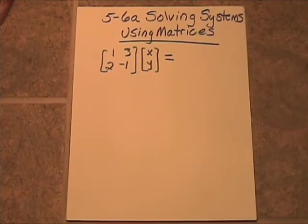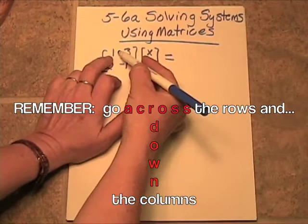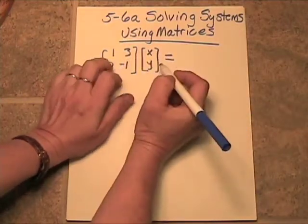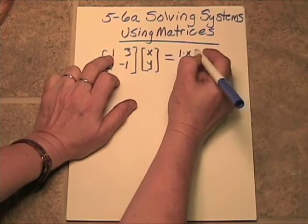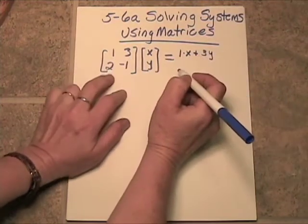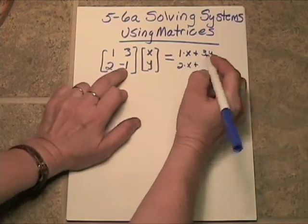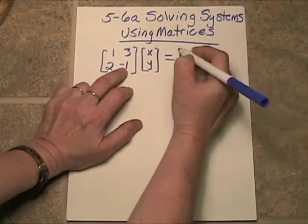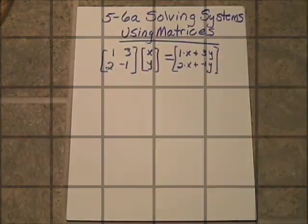Let's just do a real quick review of matrix multiplication here. Remember, you go across the rows and down the columns. So if we were to multiply this 2 by 2, we would have 1 times x plus 3 times y. And then here we would have 2 times x plus negative 1 times y. So that would result in a 2 by 1.